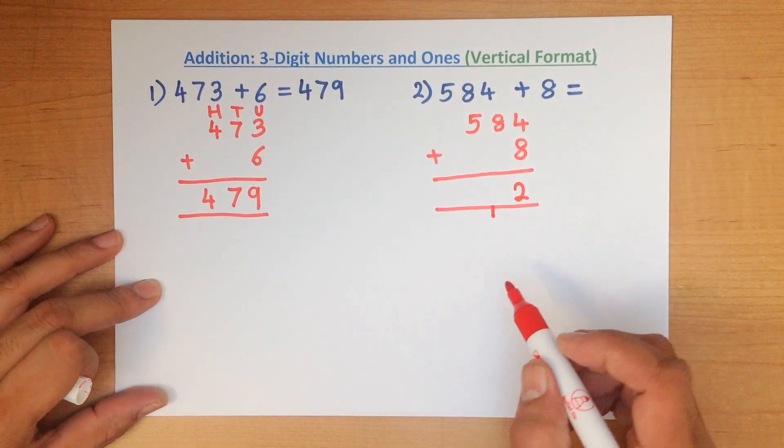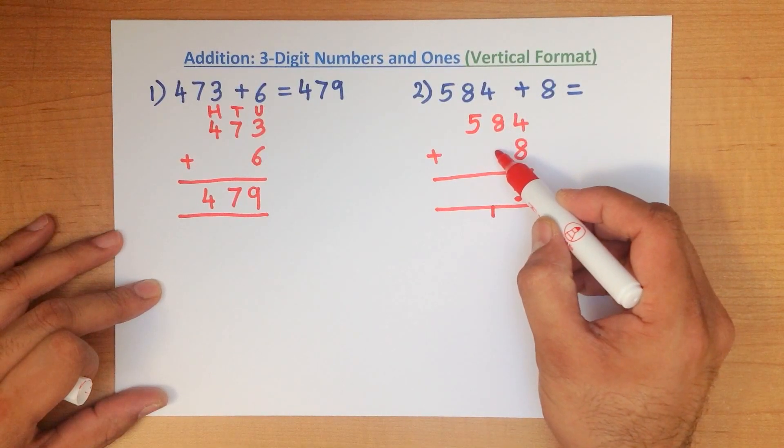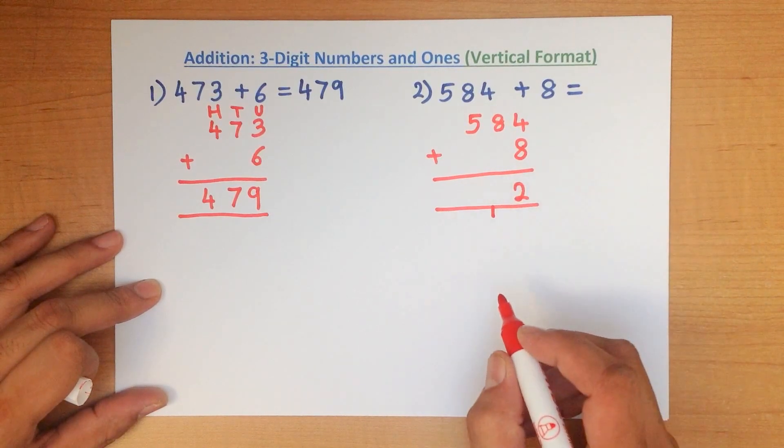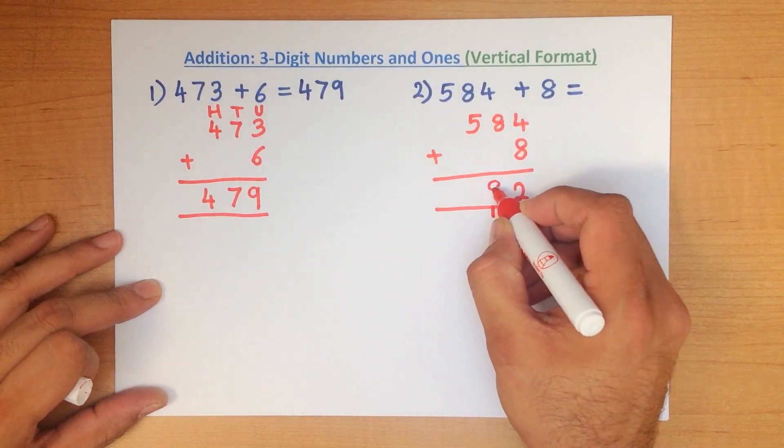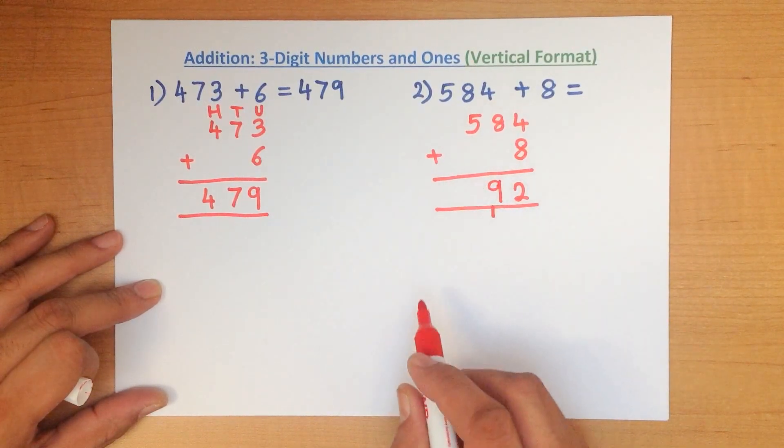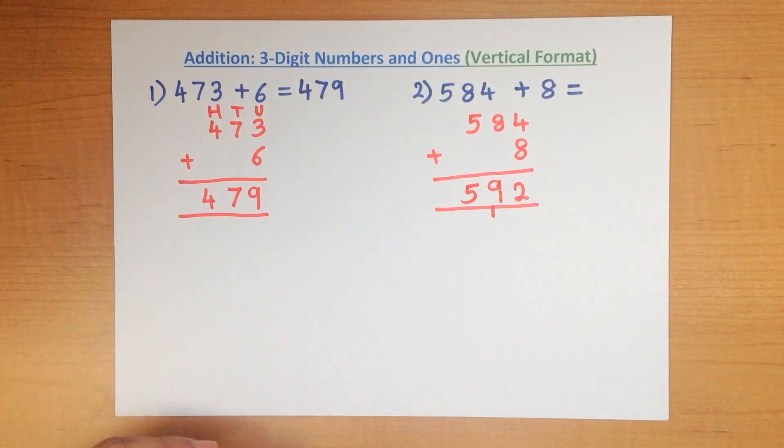12. We now add the tens. 8 plus 0 plus 1. That's right, it is 9. And lastly, 5 plus 0 is? Well, that's simply 5. And we have our answer.